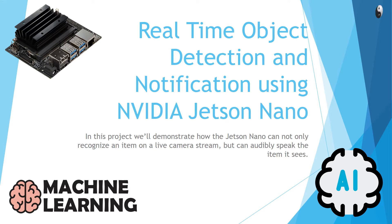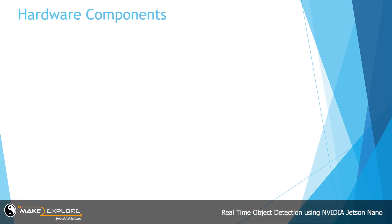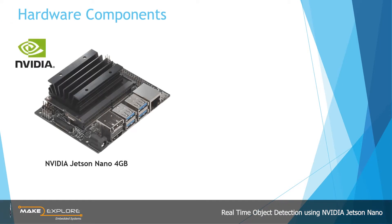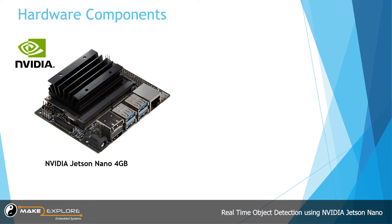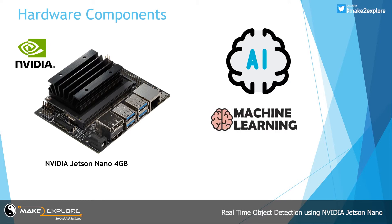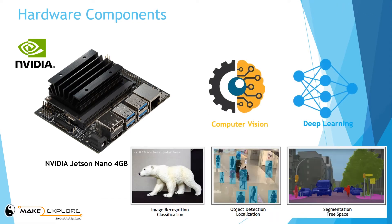So let's get started. First of all, let's see what hardware components are included in this project. Here we have used the NVIDIA Jetson Nano development board, which is a very popular SOM — system on module — and a popular development board for getting started with AI and machine learning. This NVIDIA development board is capable of deploying computer vision and deep learning applications such as image processing, image recognition, object detection, segmentation, classification, and localization.